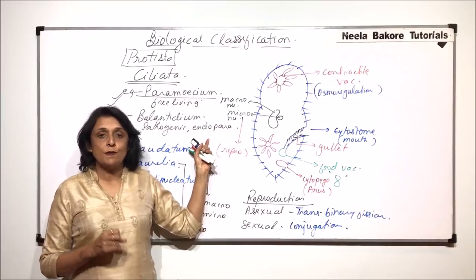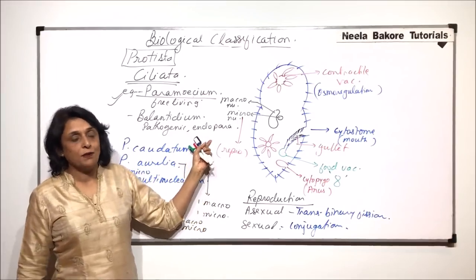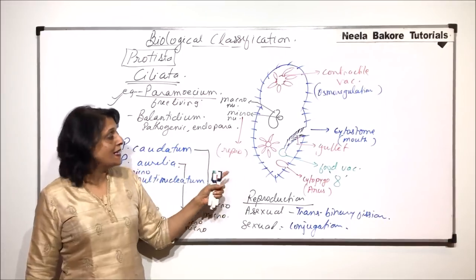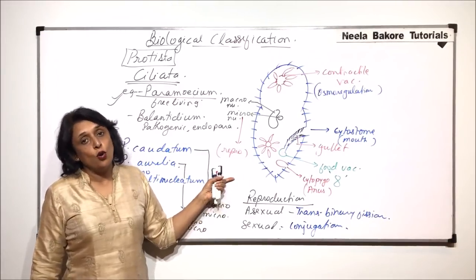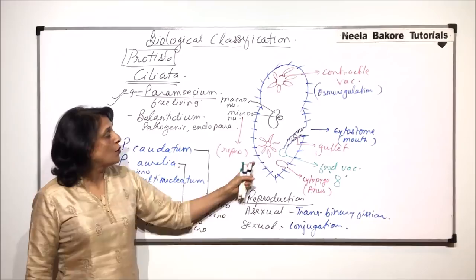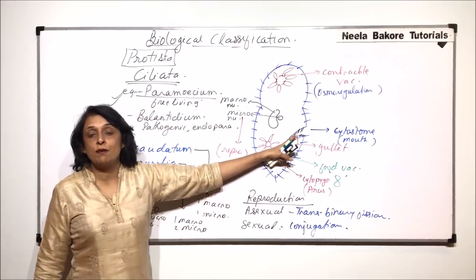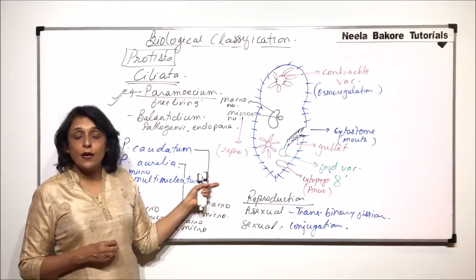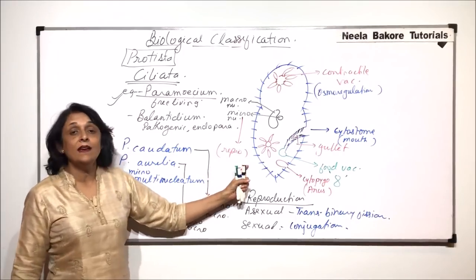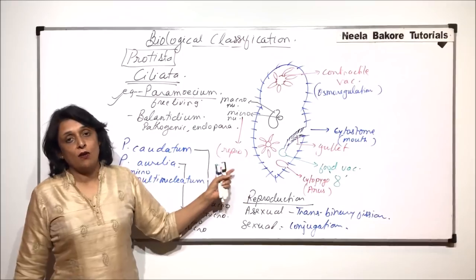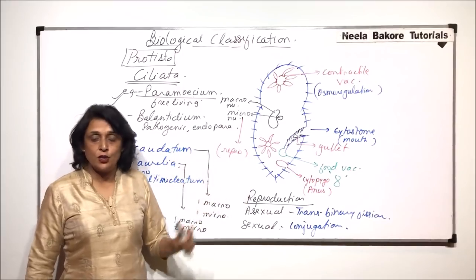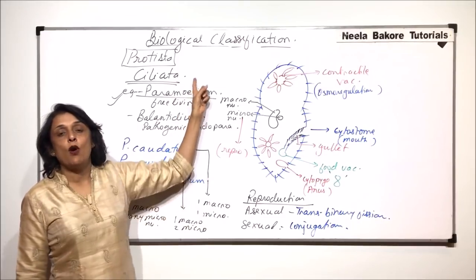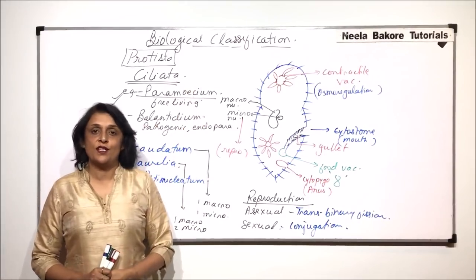The name ciliata is given because it has cilia for locomotion. Not only for locomotion, the cilia here which are present in the gullet help in capturing of food. So it is holozoic, it is heterotrophic, and it is a free-living organism, that is paramecium. This is one important example of the group ciliata in protista.